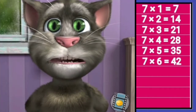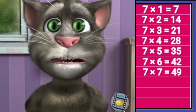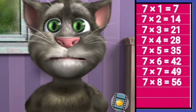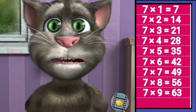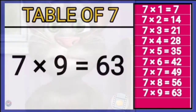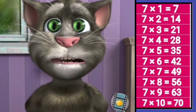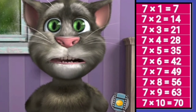Seven sixes is forty-two, seven sevens is forty-nine, seven eights is fifty-six, seven nines is sixty-three, seven tens is seventy.